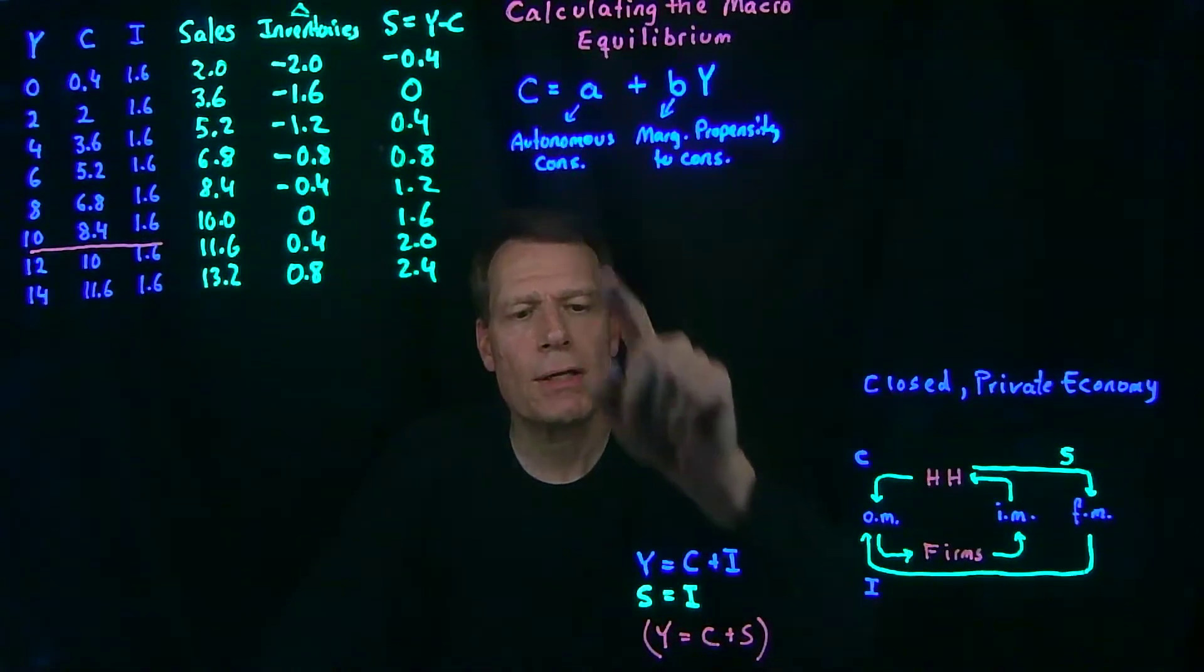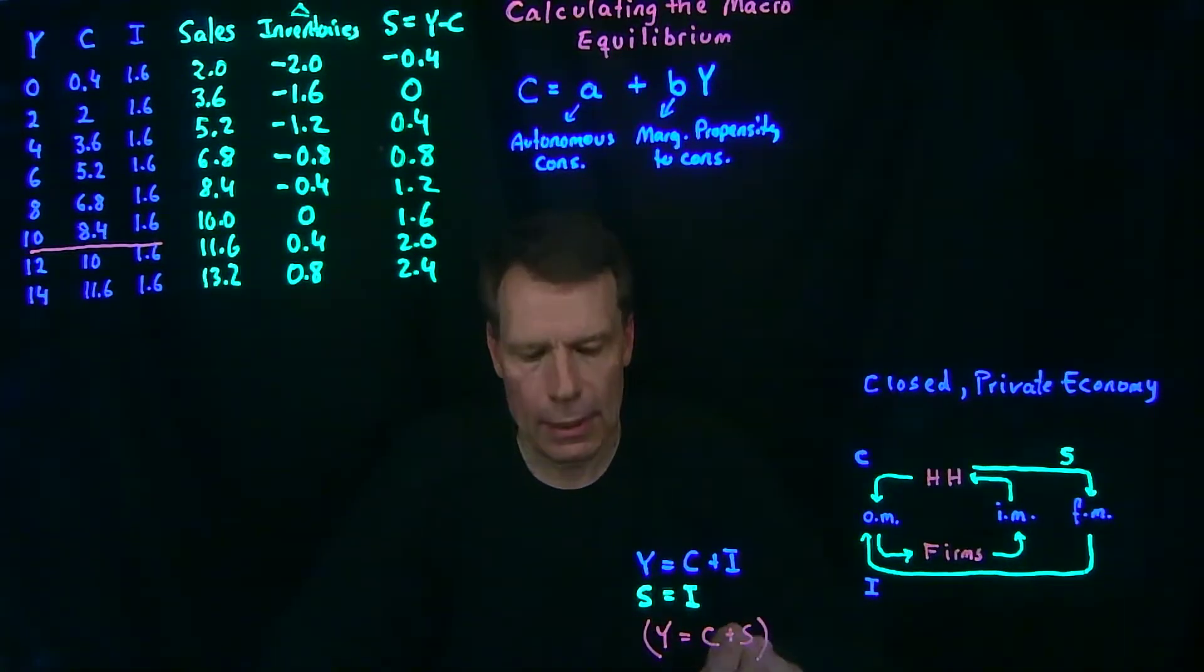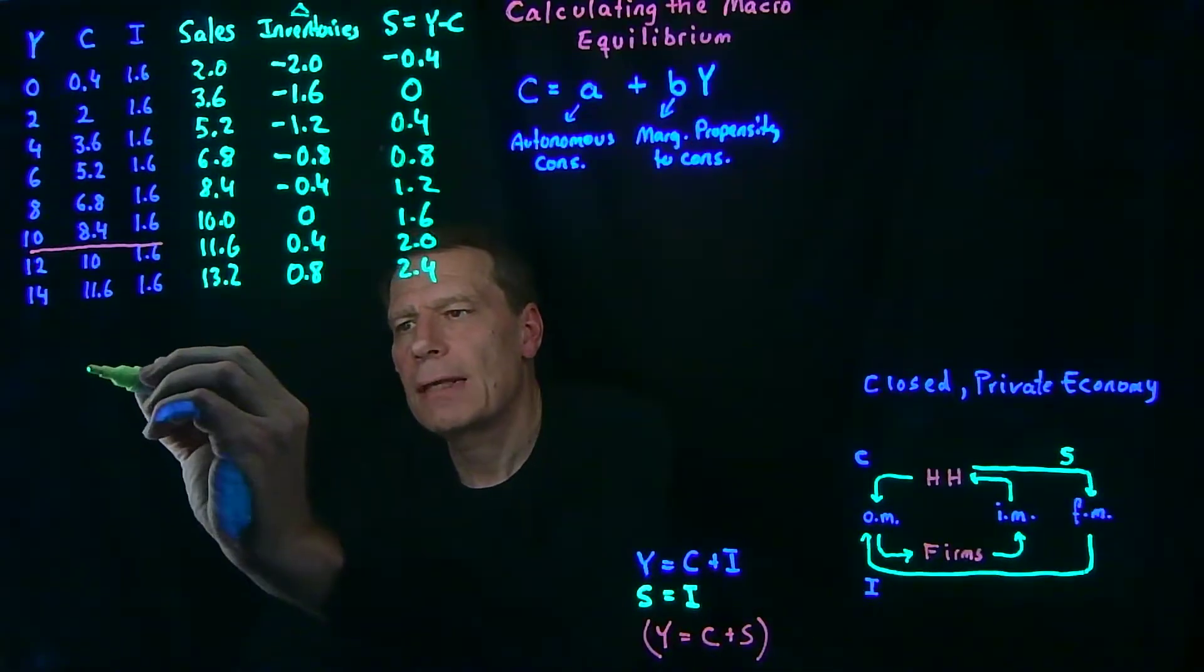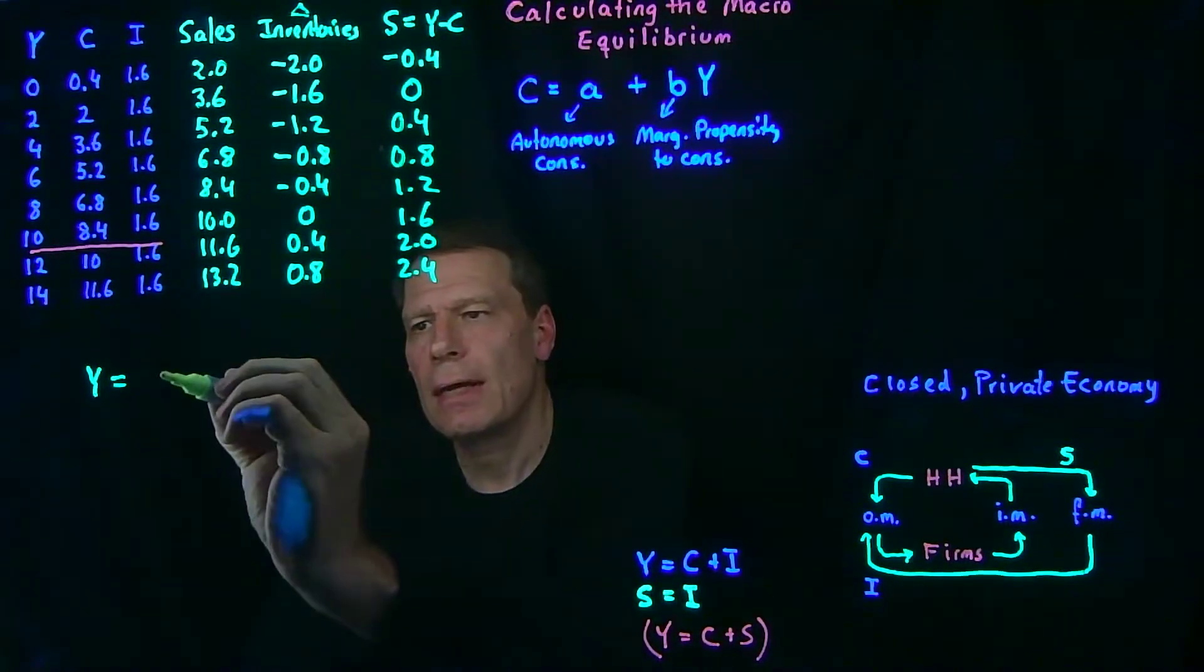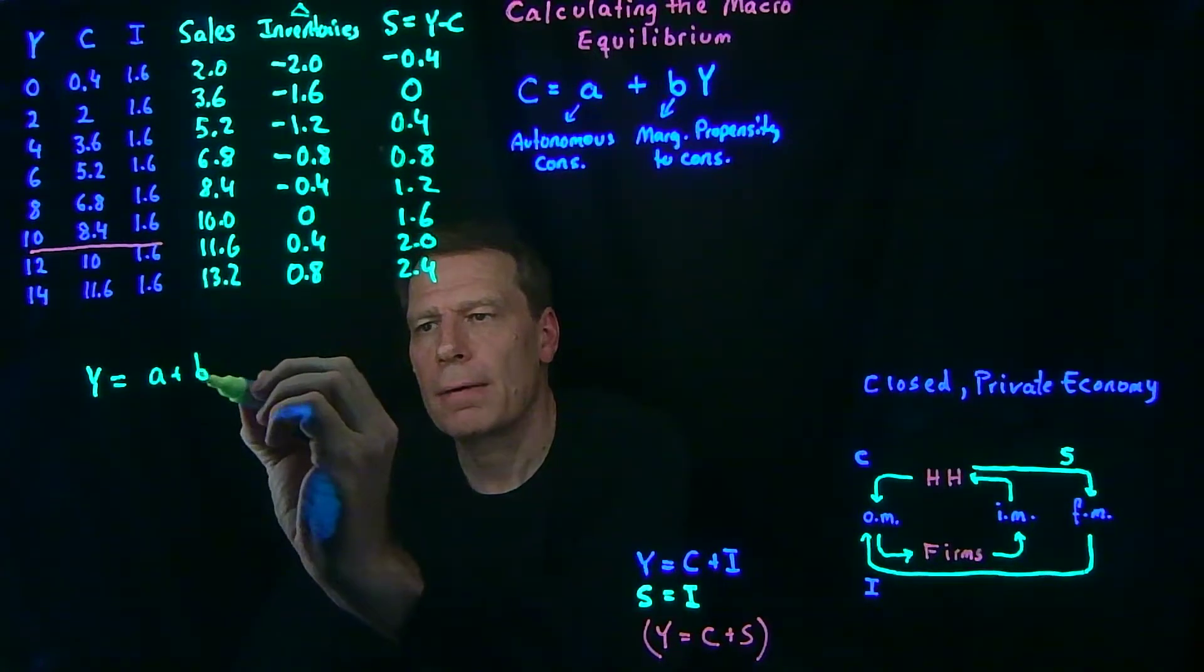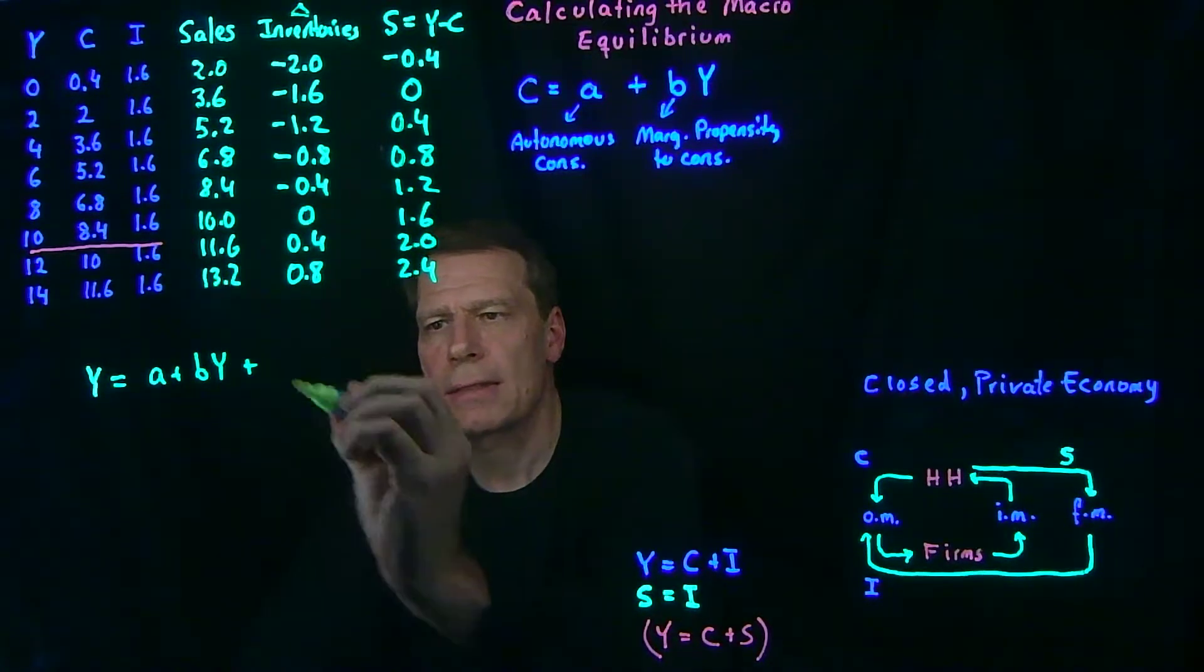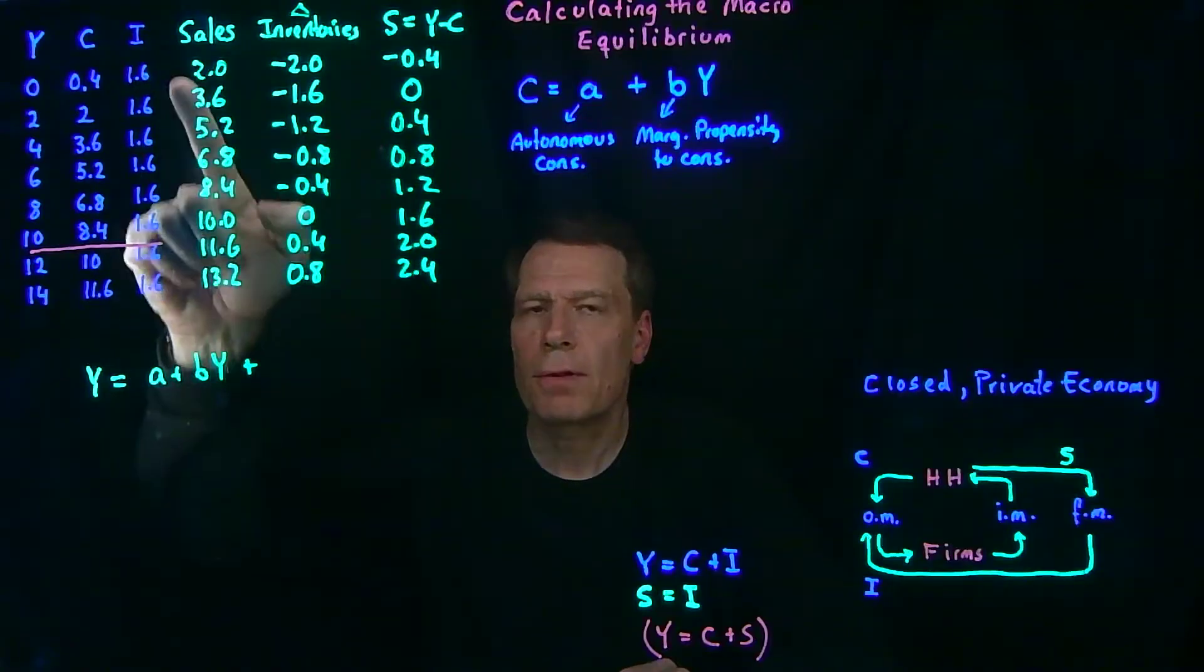So we can plug this equation into this equation. And when we do that, we get that Y is equal to this consumption, A plus BY, plus our exogenous level of investment.